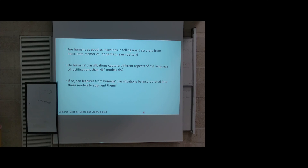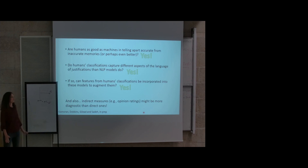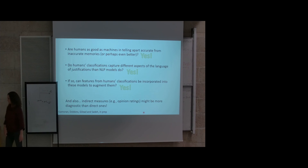Returning to the questions we asked: Can humans assess others' memories? Yes, they can. Are they as good as machines? They seem to be roughly comparable. Do humans capture different aspects of the data? Yes. Can we combine features from humans and models to augment NLP models? Absolutely yes — the ensemble demonstrates this. And an additional finding: these indirect opinion ratings appear more informative and diagnostic than direct measures of memory accuracy assessment.